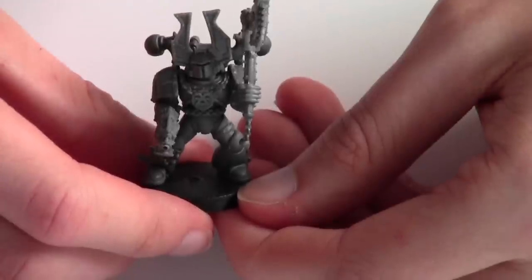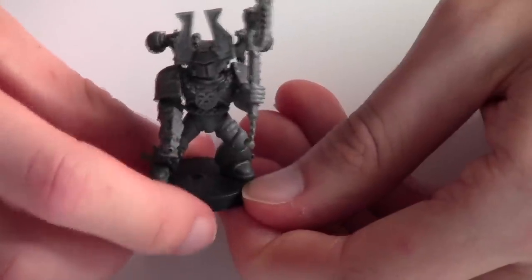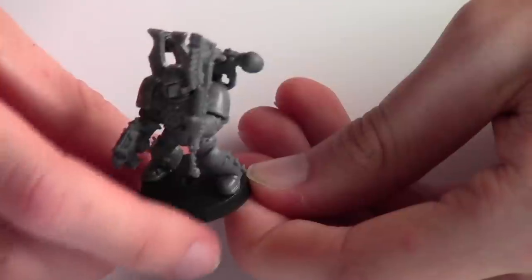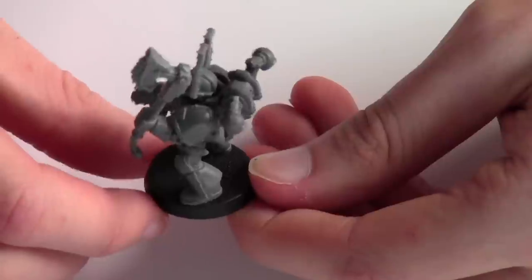So there we have a finished, fully assembled Khorne Berserker, free of all the mold lines and horrible sprue markings. It's been properly tidied up and it's ready for painting.